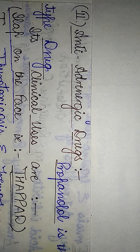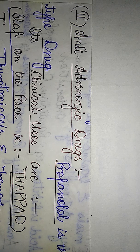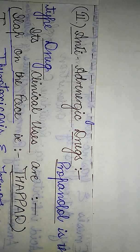Hello viewers, welcome to another session of my pharmacology series. Today the topic of my discussion is about the second class of drugs acting on the autonomic nervous system — the anti-adrenergic drugs. As we know, drugs acting on the autonomic nervous system are classified into two broad categories: adrenergic drugs and anti-adrenergic drugs.